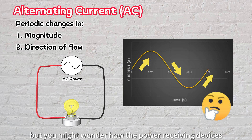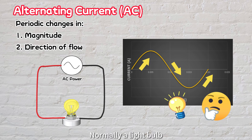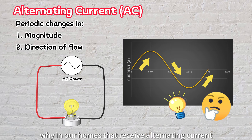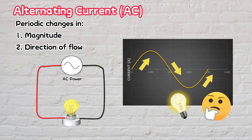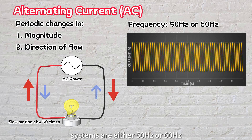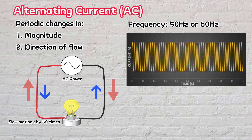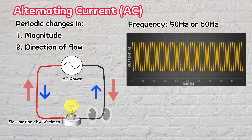You might wonder how power-receiving devices, such as light bulbs, are affected by these fluctuations. Normally, a light bulb would brighten and then dim in response. But why, in our homes that receive alternating current, does the light bulb appear to maintain a steady and consistent brightness? In fact, the frequencies used in our electrical power systems are either 50 Hz or 60 Hz. The frequency determines how often the waveform repeats in one second. For example, if the frequency is 50 Hz, it means that in one second, the current is switching its direction back and forth 50 times. This switching happens very quickly, much faster than our eyes can see.